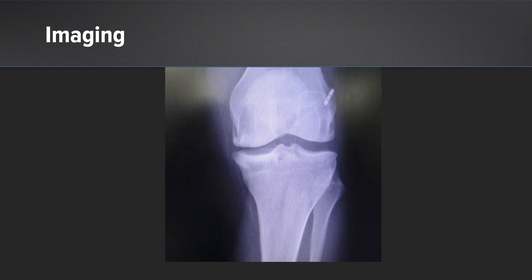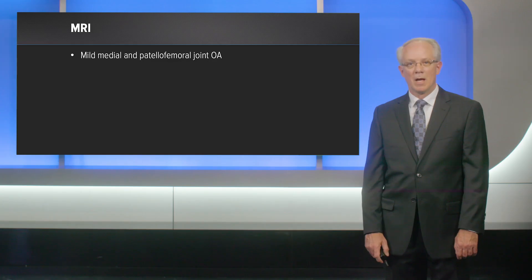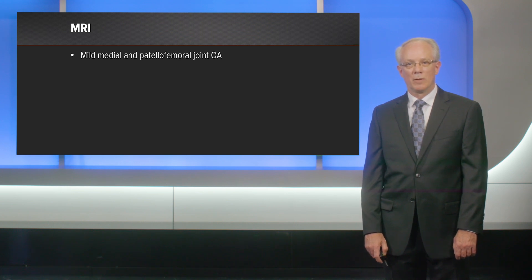First is a weight-bearing film of the left knee showing some mild medial compartment narrowing and osteophyte formation. She then had a long-standing film to show that she had seven degrees of varus deformity in the left knee. An MRI was obtained and revealed mild medial and patellofemoral joint osteoarthritis.